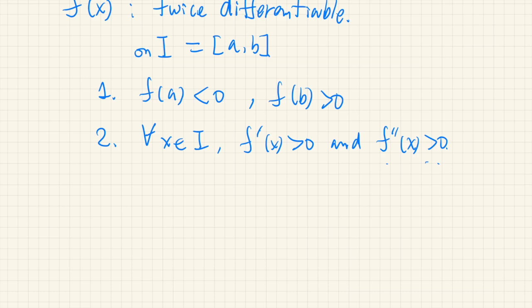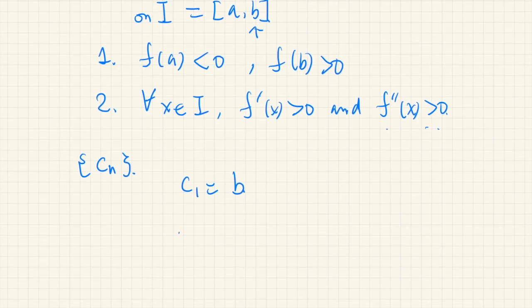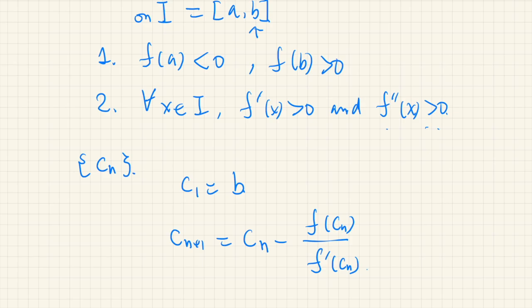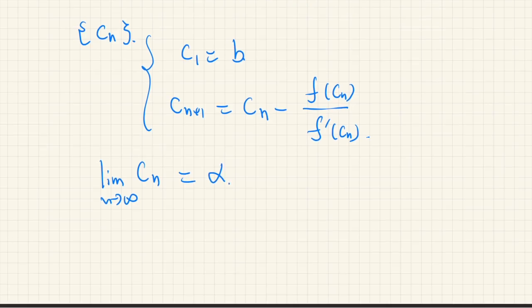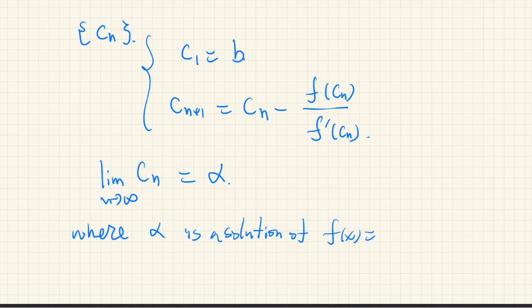We define Newton's method as follows: we generate a sequence Cn, starting with C1 equal to b — the upper bound of the interval — and then Cn+1 is defined as Cn minus f of Cn over f prime of Cn. If we define the sequence in this way, then the limit of Cn as n goes to infinity converges to alpha, where alpha is a solution of f of x equal to 0, meaning f of alpha equals 0.